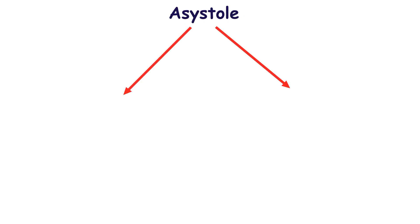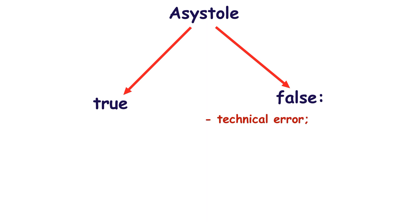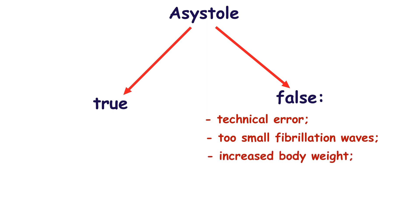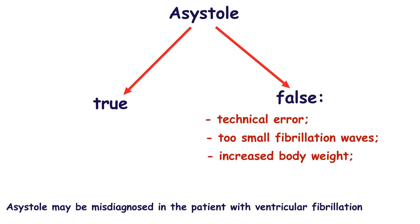Often, asystole is misdiagnosed as ventricular fibrillation. This is caused by either disconnected electrodes from the patient's body, breakdown of the ECG monitor, or undetected too-small fibrillation waves. Often in patients with increased body weight, the fine waves such as those seen in ventricular fibrillation are hidden. In this case, asystole is diagnosed instead of ventricular fibrillation.